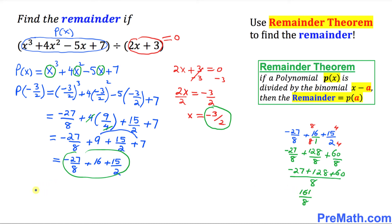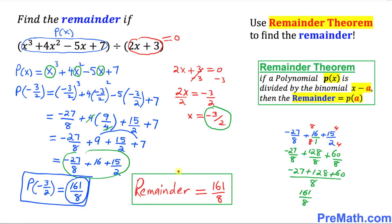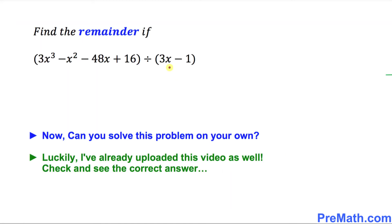So we are going to put down this one over here. P of negative 3 over 2 turns out to be 161 divided by 8, and this 161 divided by 8 is our remainder. That's our answer.